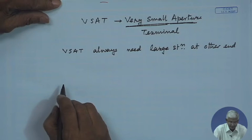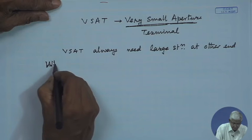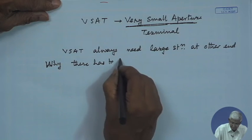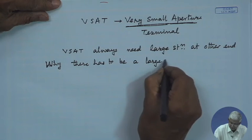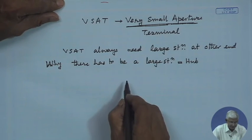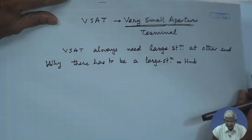A large station — called a hub — is required at the other end of a VSAT link. Why must there be a larger station? To understand this, let us do a small calculation. This will give you familiarity with the C/N calculations we did earlier. We will do a quick calculation to see how much power — how much power amplifier rating — is required for a VSAT if it has to directly communicate with another VSAT. Please keep your calculator ready.